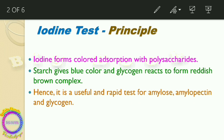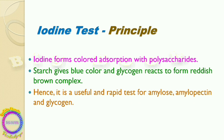The principle of the iodine test is that iodine forms colored absorption complexes with polysaccharides. Whenever you add iodine it absorbs to the polysaccharides and gives a certain color. Starch gives a blue color and glycogen reacts to form a reddish-brown complex, depending upon the nature of the polysaccharide.